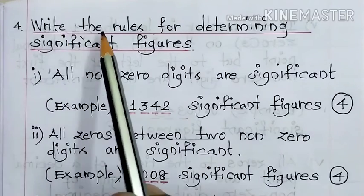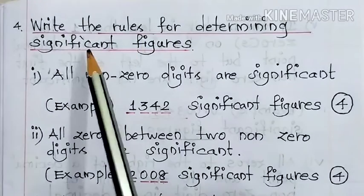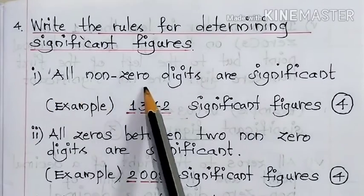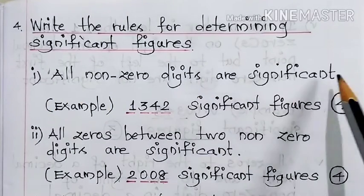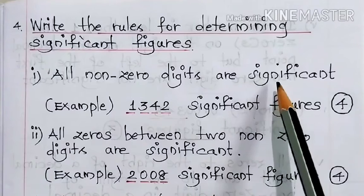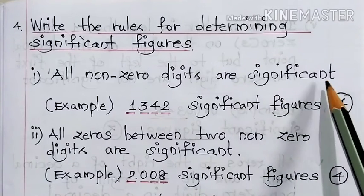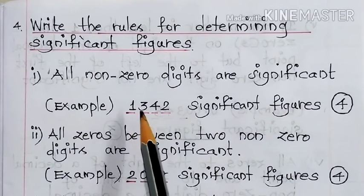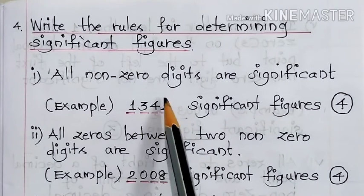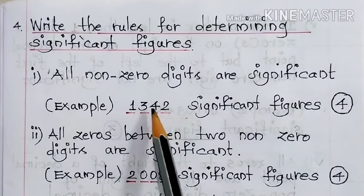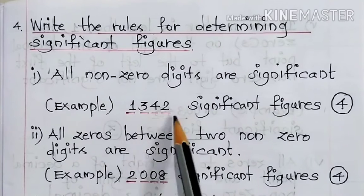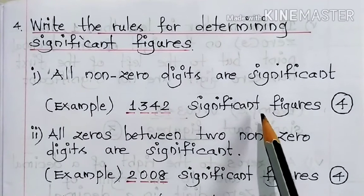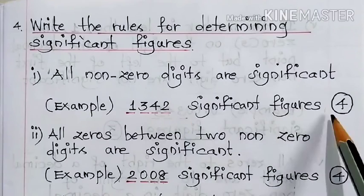The question is: write the rules for determining significant figures. Number one: all non-zero digits are significant. What is meant by significant? Example — here comes the number 1342. In this number we don't find any zeros at all, so all the digits are significant. The significant figures of this number is four.